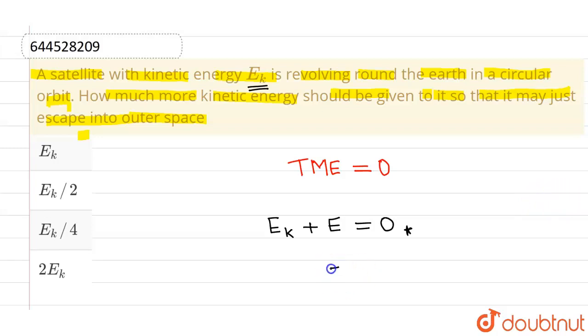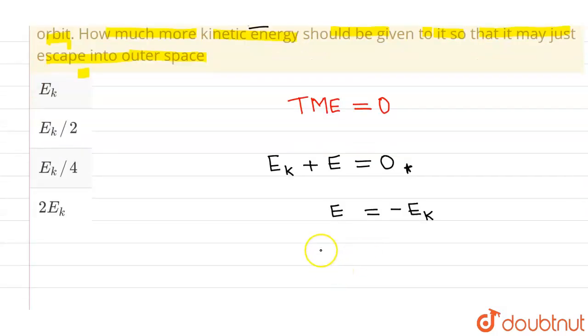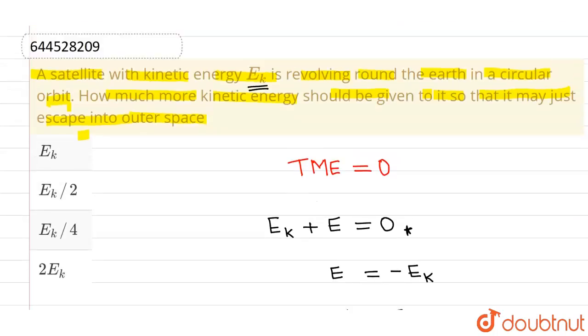So from here, I will be getting the extra energy E which is to be added into the satellite equals to minus EK. Now if I take the magnitude of energy only, it comes out to be EK. So same amount of energy EK should be added to the satellite or given to satellite in order to make it escape from the earth's orbit.